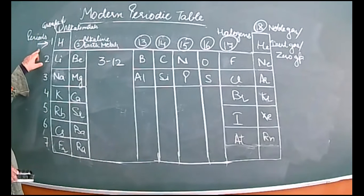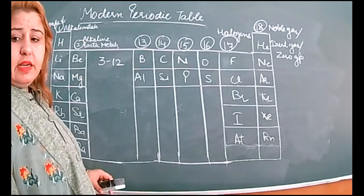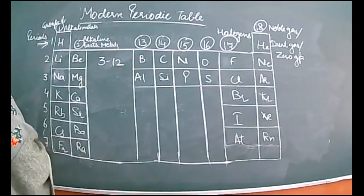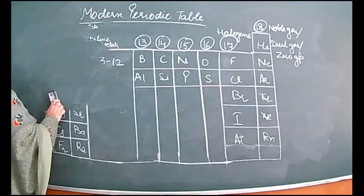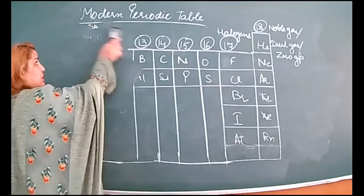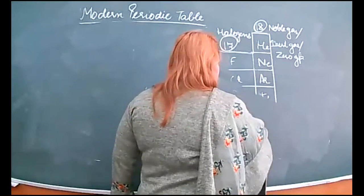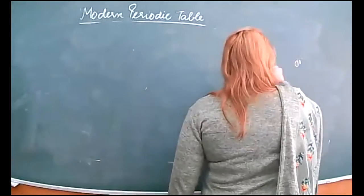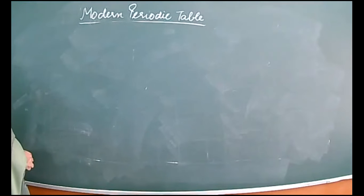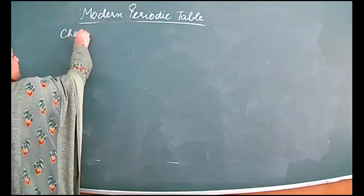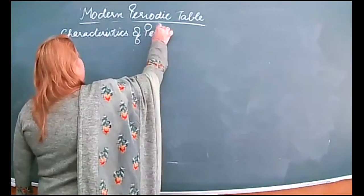Now we will discuss the characteristics of periods. The groups are vertical. We will discuss six characteristics in the case of periods and six characteristics in the case of groups. Write down: characteristics of periods.